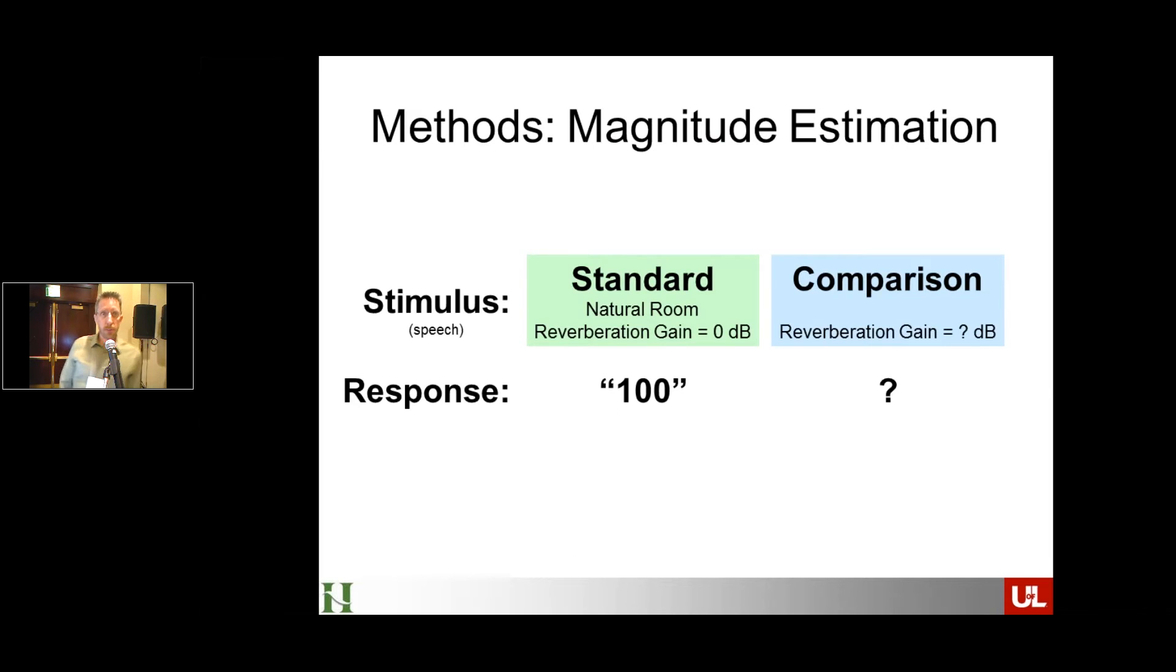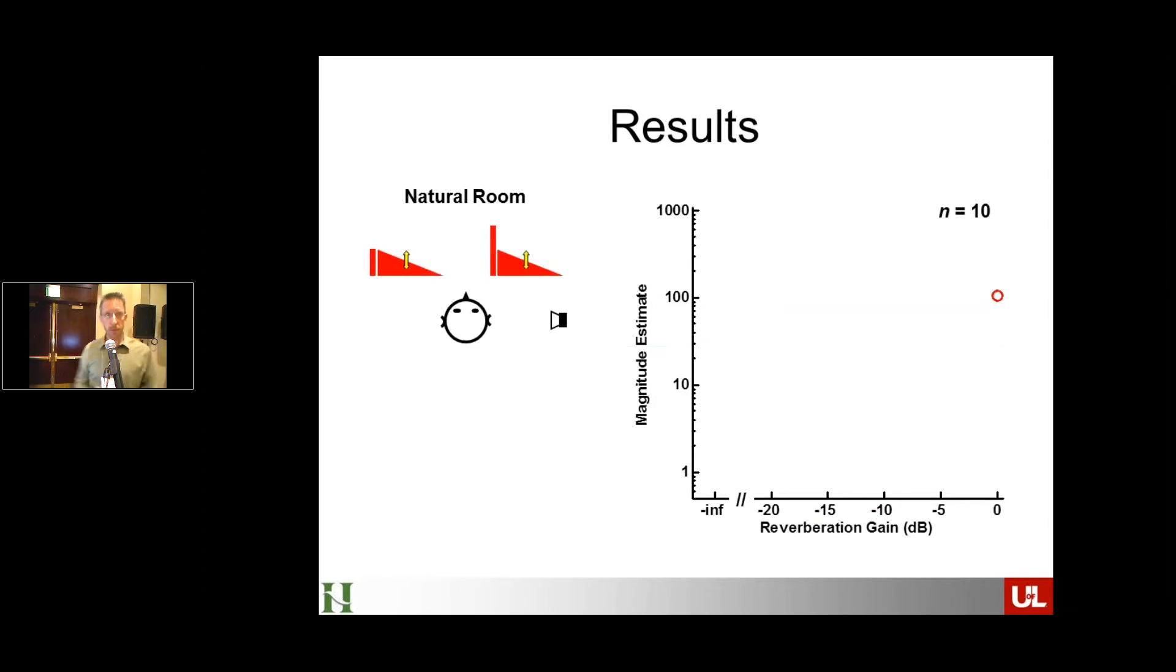How are we going to ask listeners about perceived reverberation? We're going to use a very simple technique that's been used a lot in the loudness literature to estimate loudnesses of sounds, so-called magnitude estimation. And basically the way this works is that on a given trial in the experiment, we're always going to play two sounds. The first one is going to be the standard, and in this case, that's going to be the natural simulation of the room using a speech stimulus in this case. And we're going to tell the listeners that that has a level of the reverberation of 100. That's your standard. And then we'll play a comparison signal in which we manipulate either the level of reverb in both ears equally or only in one ear. And then we'll ask the listeners to make a rating based on that. So if they think the sound is half as reverberant, say, then they should give a number that's half as big, like 50. And that's, as I said, the same type of methods used in loudness.